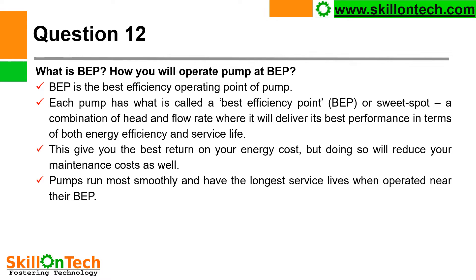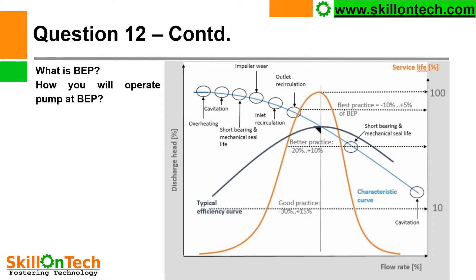Pumps run most smoothly and have the longest service life when operated near their best efficiency point. We already know the best efficiency point, but where does it appear on the HQ curve? This is our HQ curve and this is our efficiency curve. The operating point is where the system head curve cuts the HQ curve, but we should operate the pump where the HQ curve intersects with the maximum efficiency point.